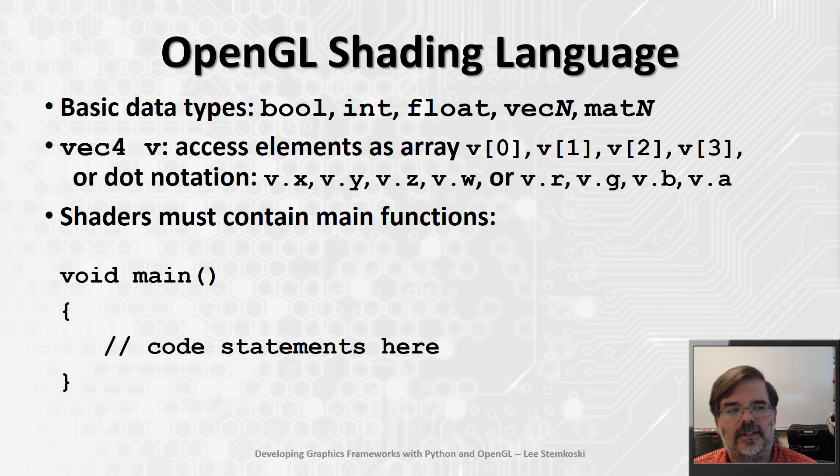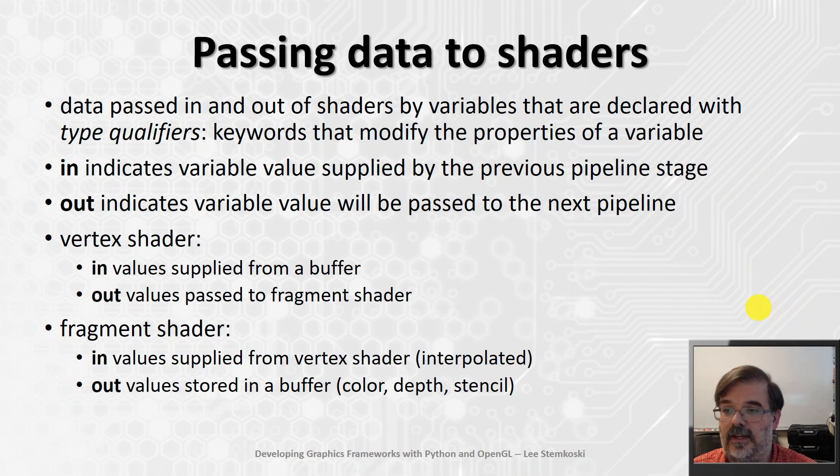Now, in the description of the graphics pipeline from a few videos ago, it was mentioned that vertex shaders, which are responsible for the geometric processing, they're going to receive data from buffers. And you might be wondering, how could a shader program such as this receive data from an external source if there are no parameters being taken? In general, data is going to be passed in and out of shaders from variables that are defined using certain type qualifiers. A type qualifier is a keyword that modifies the properties of a variable. And you might have seen this in other programming languages. For example, a lot of programming languages have a type modifier called const, short for constant. And that indicates that the value of the variable will not be changed in the program.